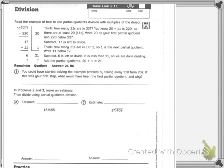Add the partial quotients. 20 plus 1 equals 21. A remainder is 6. The quotient is 21. You could have started solving the example problem by taking away 110 from 237. If this was your first step, what would have been the first partial quotient and why? I want you to answer that one on your own.